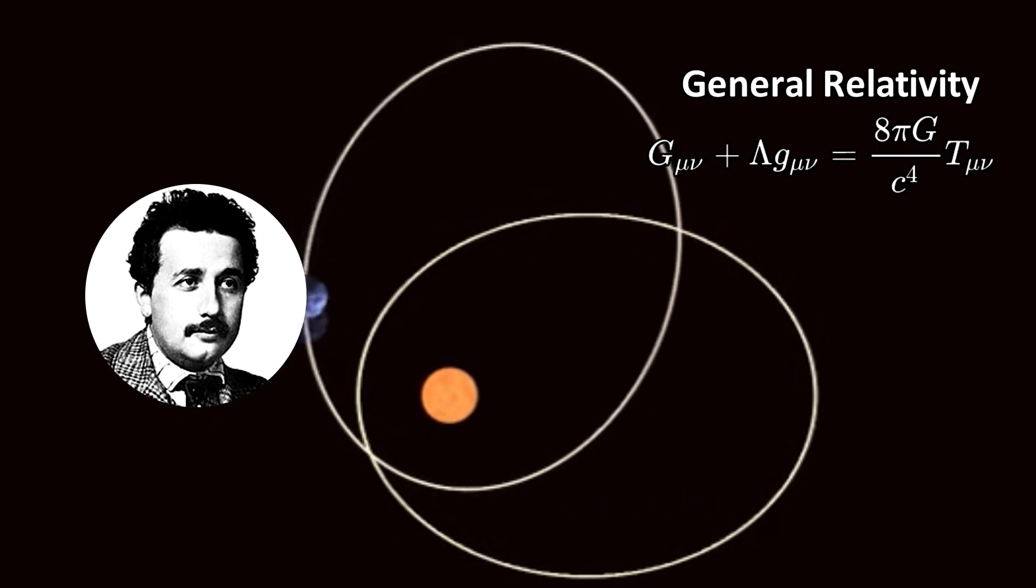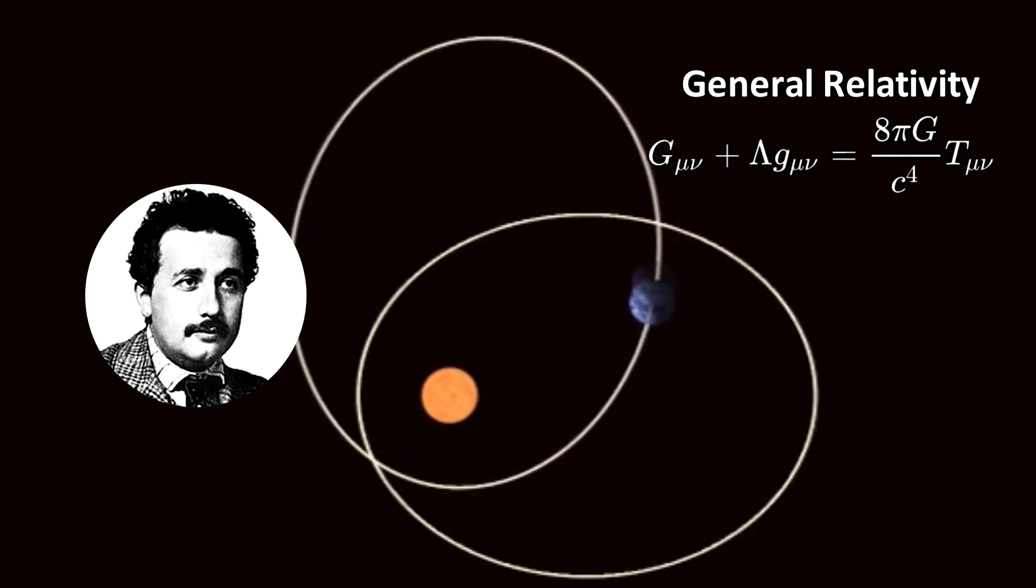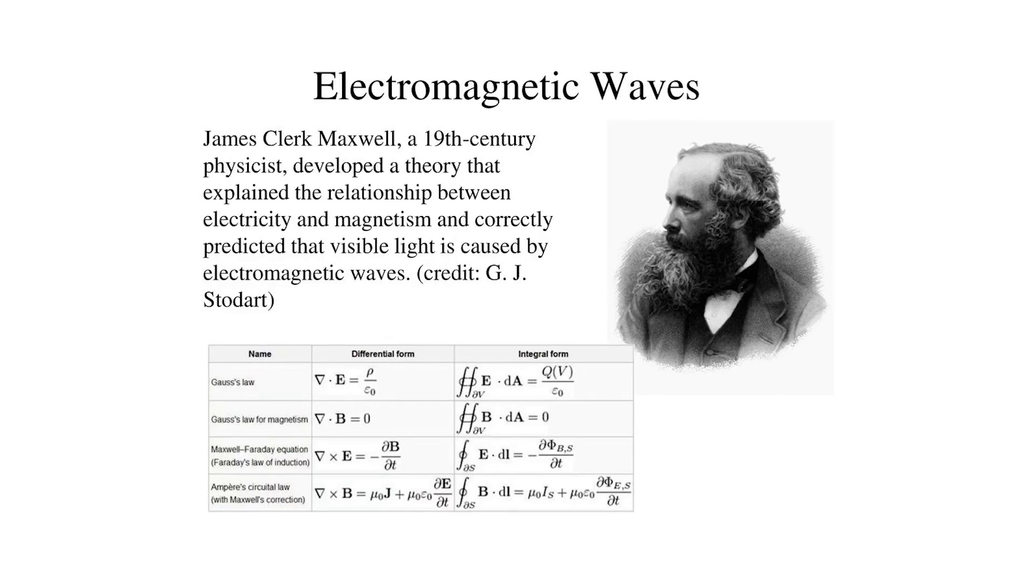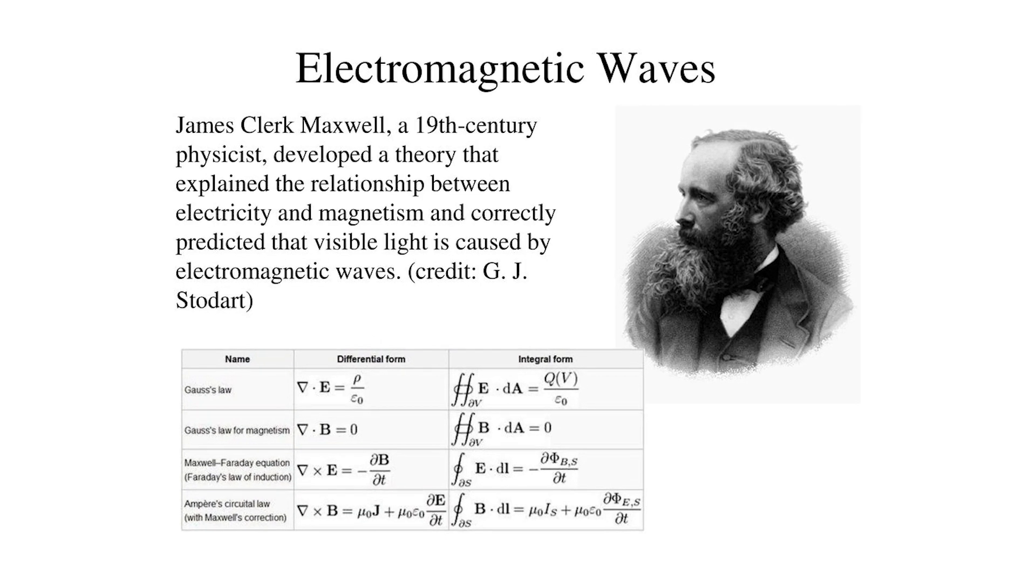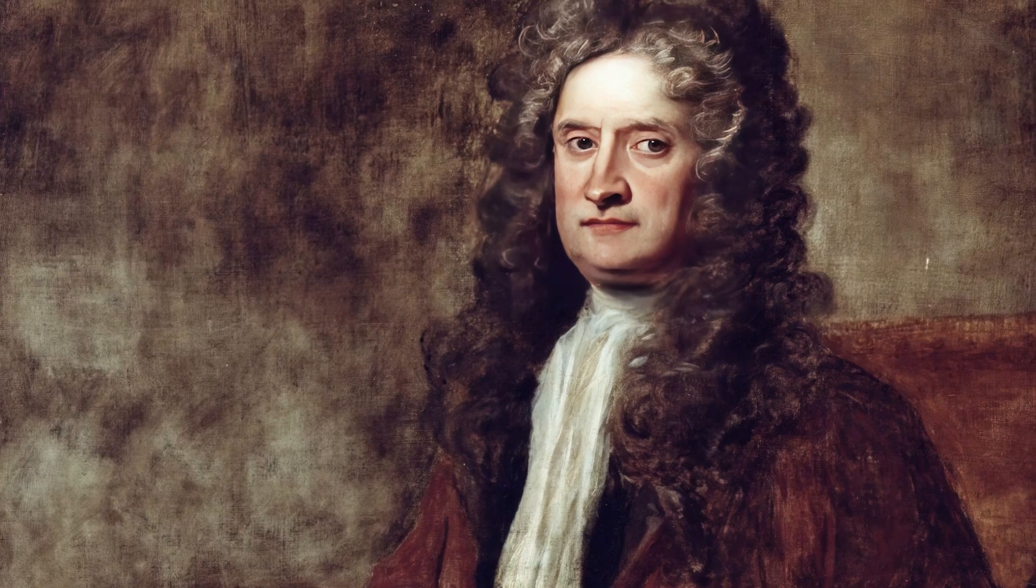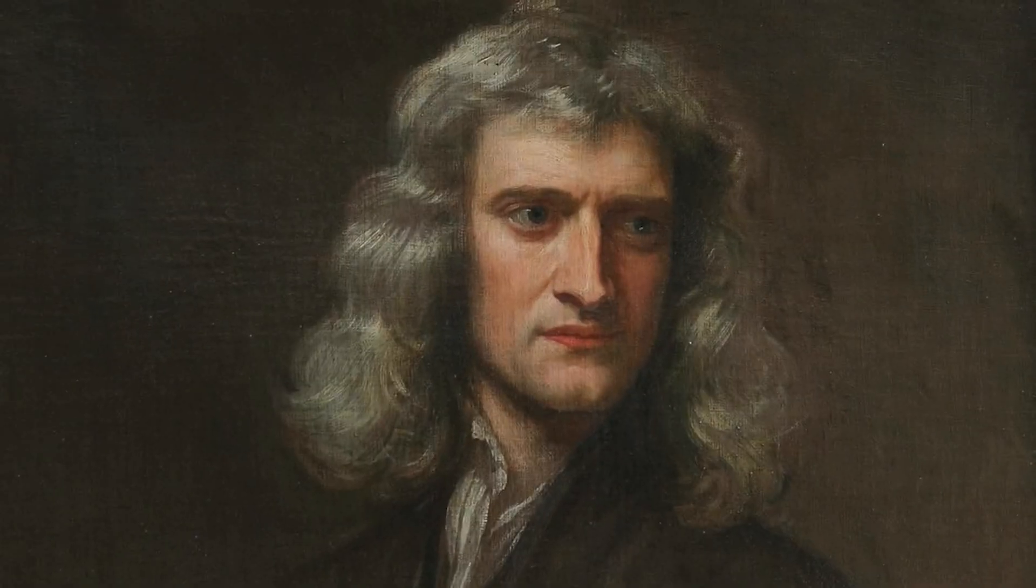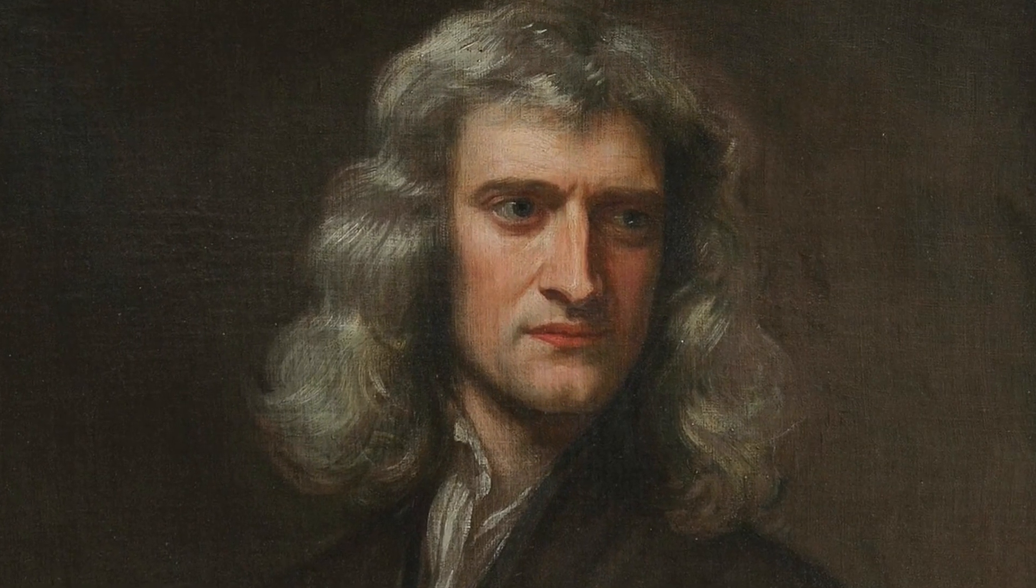Before diving into Einstein's theory of relativity, we must look at the two famous physicists who greatly influenced Einstein's work. James Clark Maxwell and his law of electromagnetism and Einstein's idol Sir Isaac Newton with his laws of motion. Let's start with Sir Isaac Newton, one of the greatest scientists of all time.